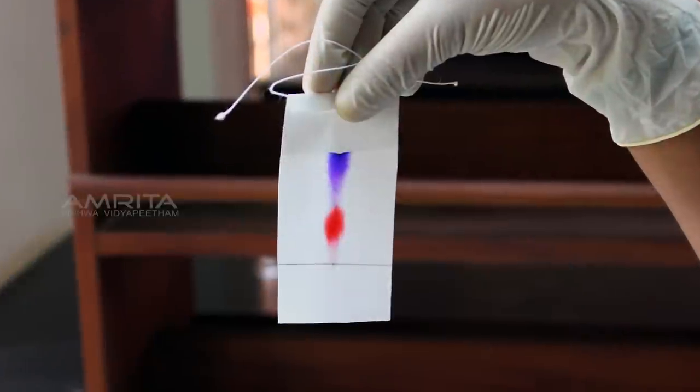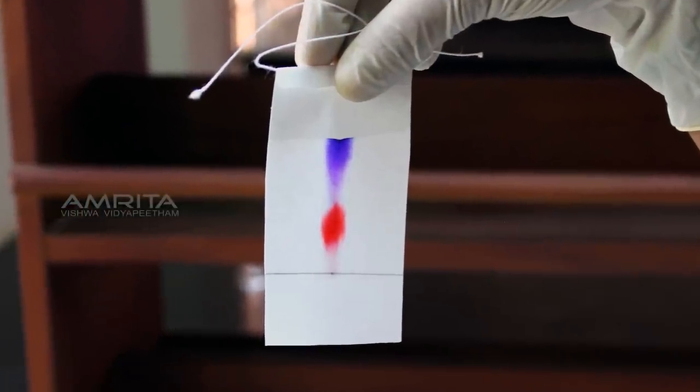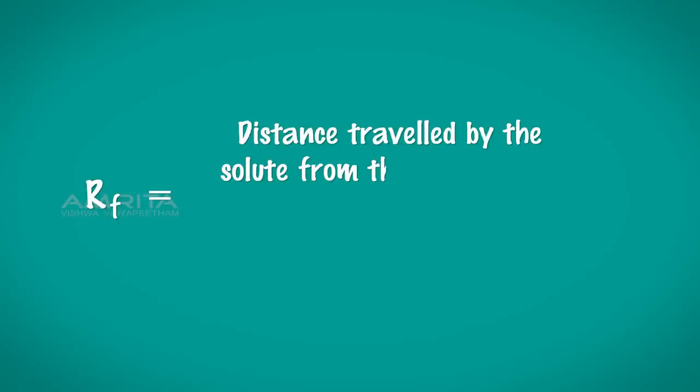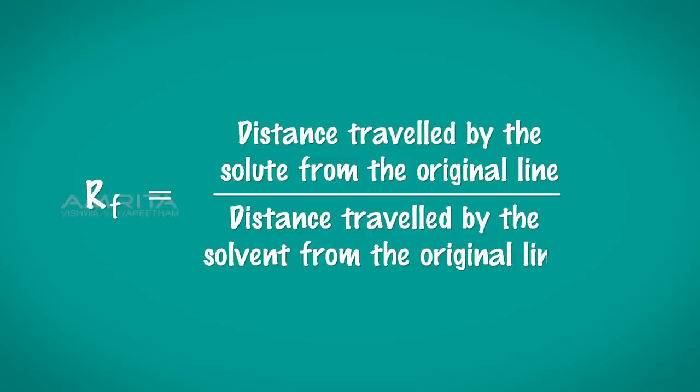Calculate the RF values of the blue and red inks by using the formula. RF is equal to distance traveled by the solute from the original line divided by the distance traveled by the solvent from the original line.